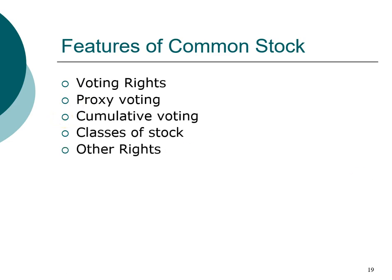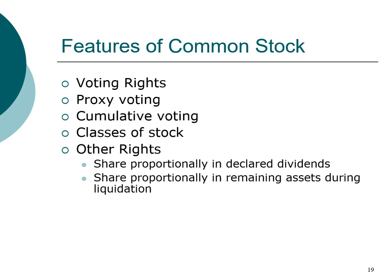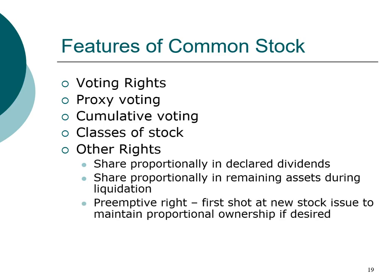Other rights that a shareholder has include the right to be paid dividends if a dividend is declared, the right to receive any remaining value in case the company goes bankrupt and declares a liquidation. Also, many companies have preemptive rights, which give existing shareholders the first right of refusal — the option, but not the obligation, to buy new stocks if the company issues new shares, allowing current owners to maintain their ownership control and ability to participate in future dividend payments.